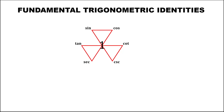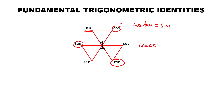For multiplication, if we multiply two functions, the result is the middle function. So if we have tangent times cosine, or cosine times tangent, the result is the middle function, sine. Then cosecant times cosine — the middle function is cotangent. Then sine times cotangent — the middle function is cosine. This is how to use this figure to find the different trigonometric identities.